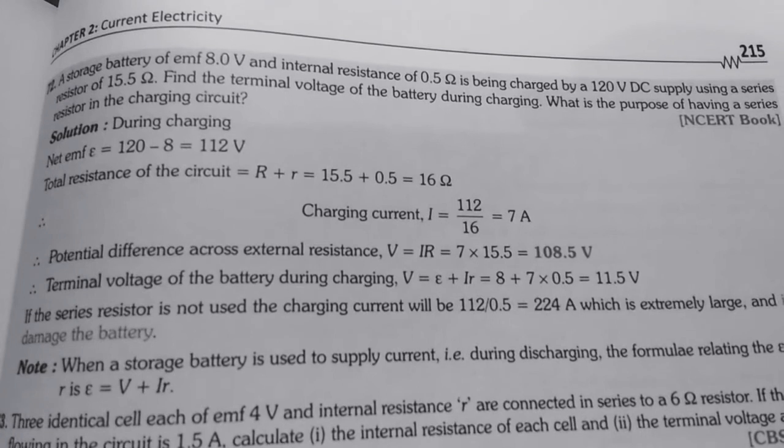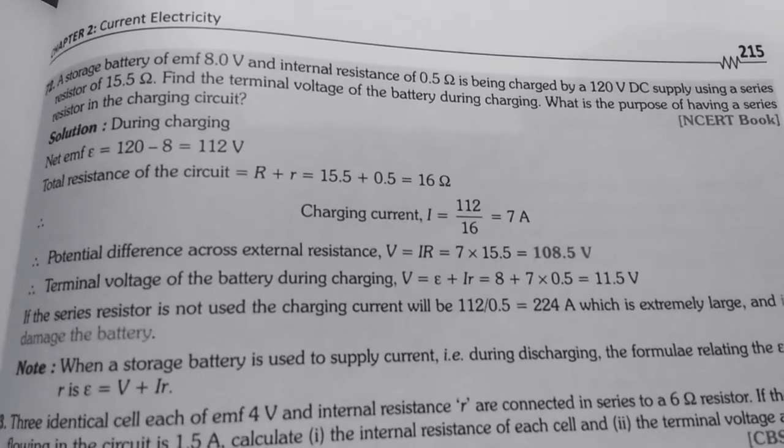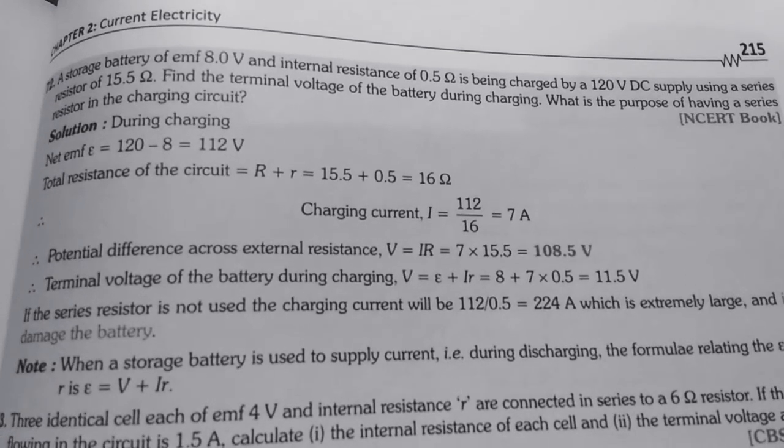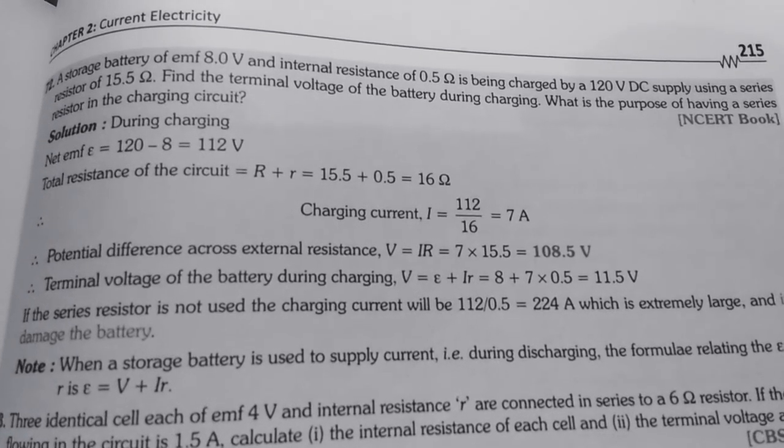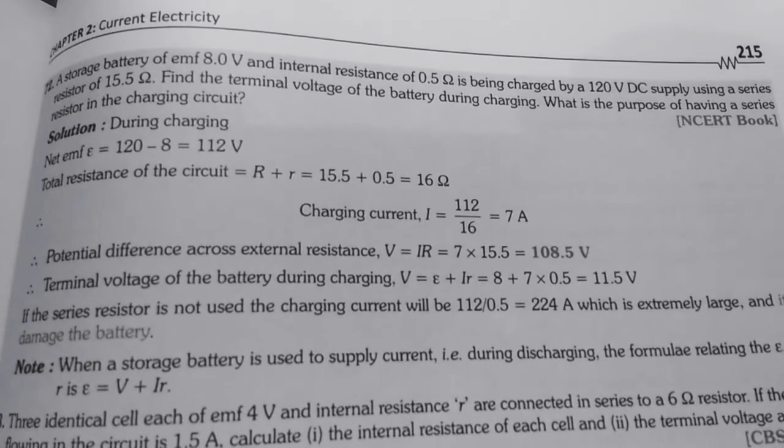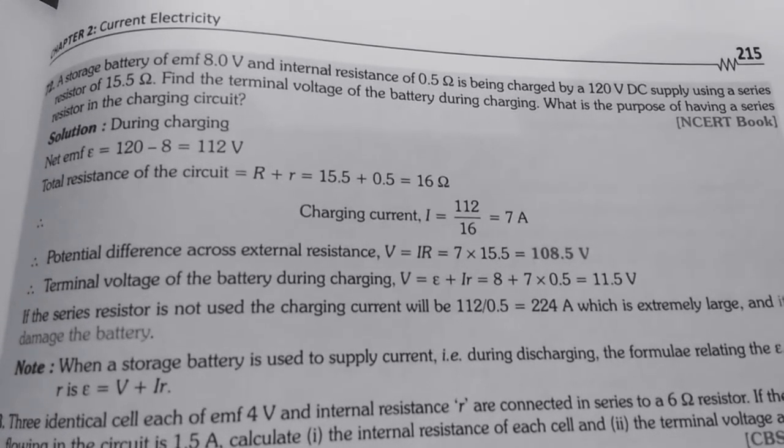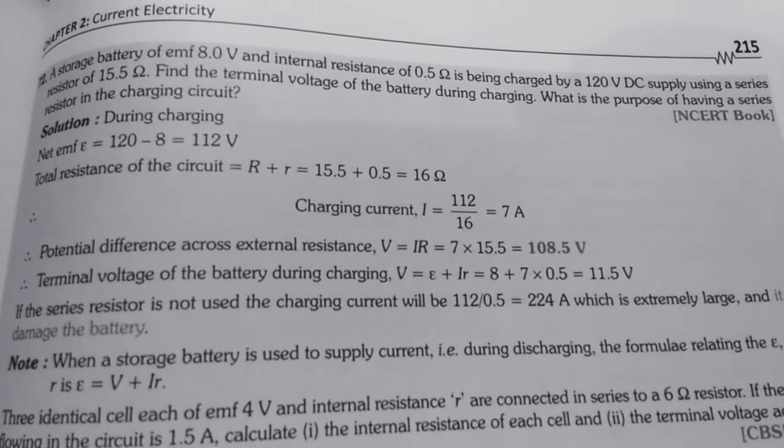Then we also have to find out the terminal voltage of the battery during charging. Terminal voltage, we will write the whole voltage. V equals to E plus IR. This is the formula for terminal voltage. So, it is 8 plus 7 into 0.5 equals to 11.5 volt.